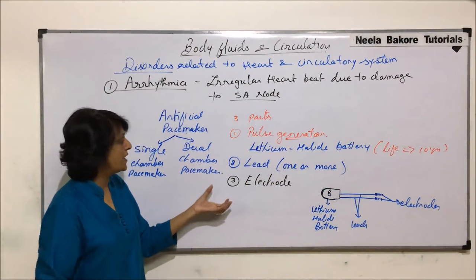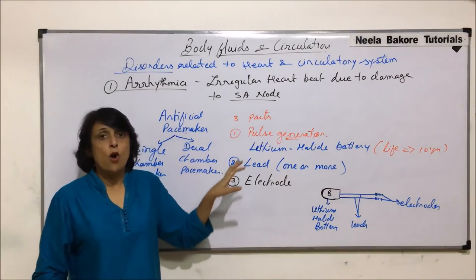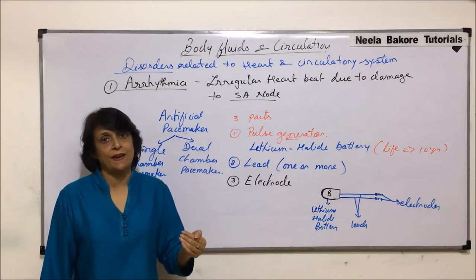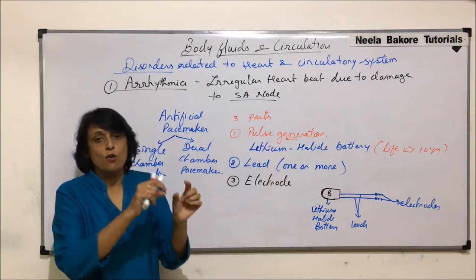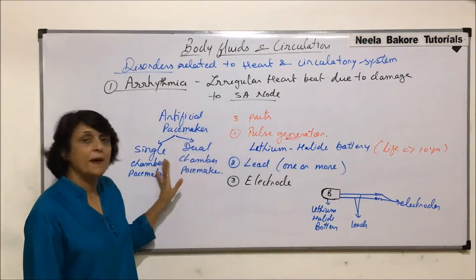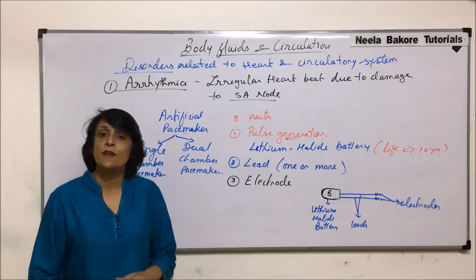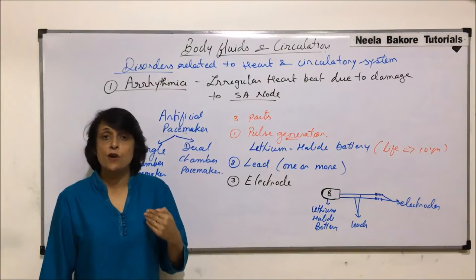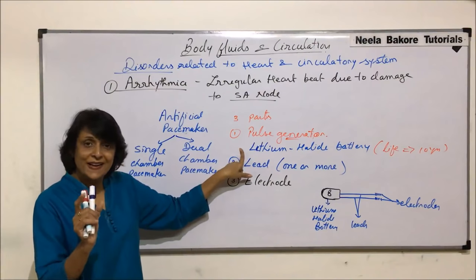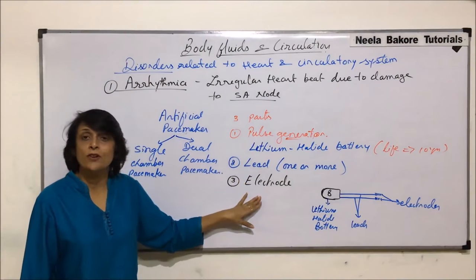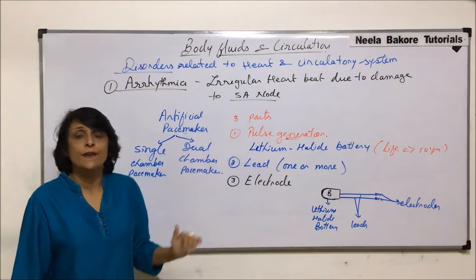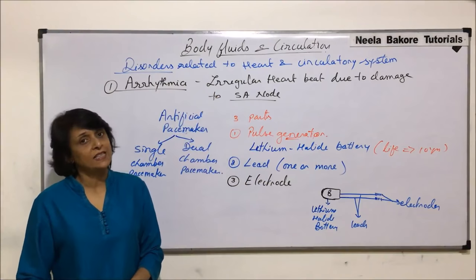Where exactly is the pacemaker implanted? Normally, the chosen place is just beneath the collar bone, slightly on the left-hand side — that is where the battery is implanted. The cord reaches up to the heart, and the electrodes are inserted into the chamber depending on which type is used. The pacemaker generates a stimulus, which helps in contraction of the heart, regaining rhythmicity and taking care of arrhythmia.